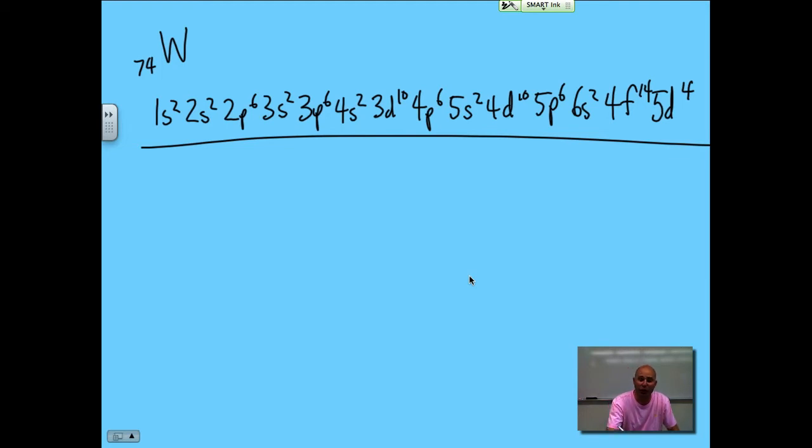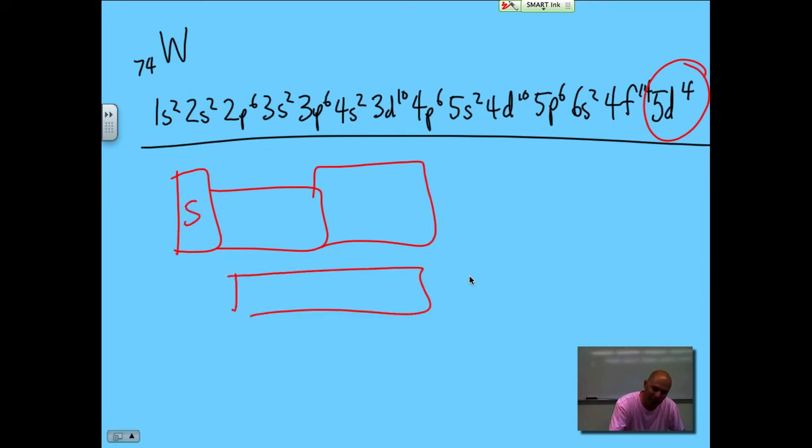I want you to notice that it is a lot easier. If I just look at the end. 5D4. I can say to myself, S, P, D, F. 5D4. Well, D starts at 3, 4, 5. So I know it's in this row. 1, 2, 3, 4. There. It would have to be this one. And that would be tungsten.